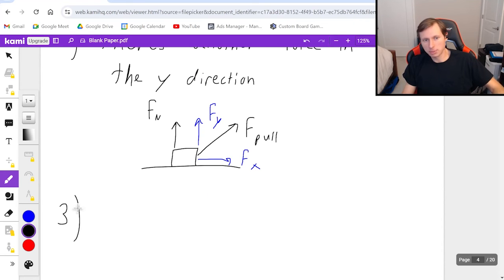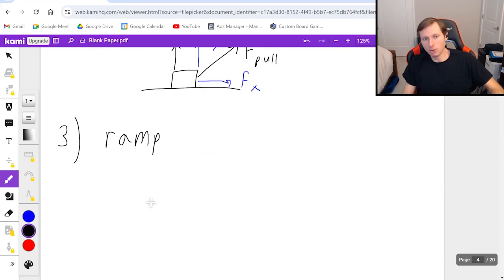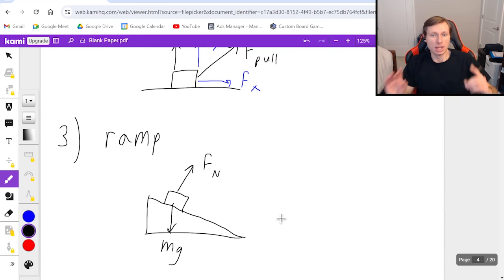And then the third exception, and this is the hardest one, is ramp problems. If you have, for instance, a box sliding down a ramp like this and MG points straight down and the normal force points at an angle like this, then Fn is not going to be MG. If you want to solve this problem, I have videos on how to solve it, but just know normal force does not equal MG for this problem either.